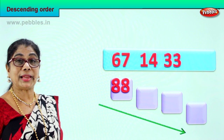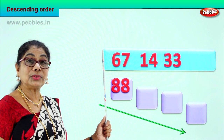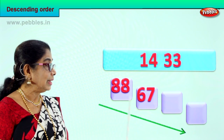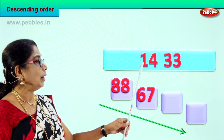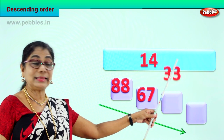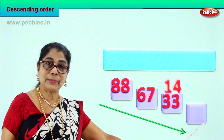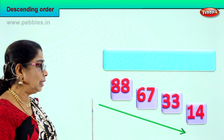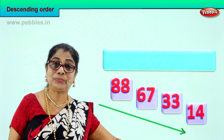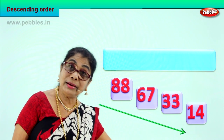Now we check which number comes next. We have three tens, one ten, and six tens. The next bigger number is six tens — sixty-seven, seven ones — and that comes second. Next we have one ten and three tens, so we take three tens, three ones and place it here. Finally one ten, fourteen, four ones comes last. Now we have arranged all the numbers in descending order: eight tens, six tens, three tens, and one ten going right down.